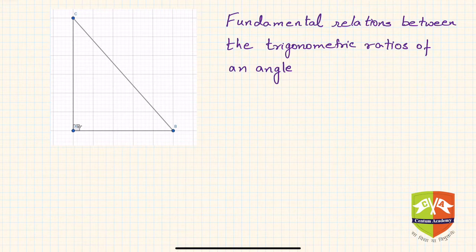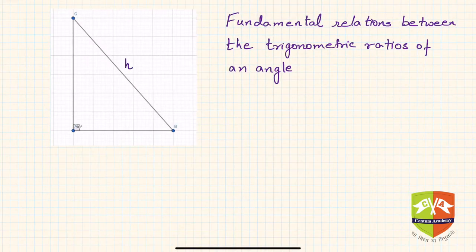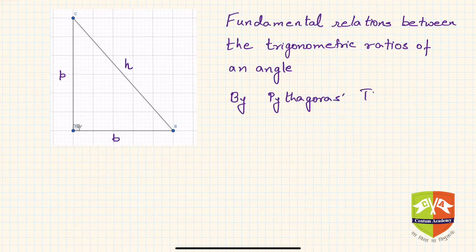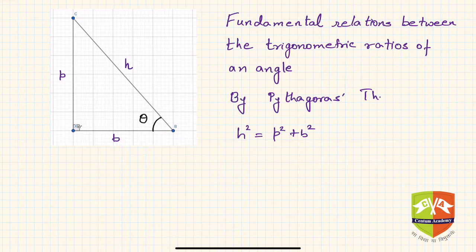Let us see the first and very basic relationship. I have shown a triangle ABC which is right-angled at A. Side BC is the hypotenuse h, side AB is the base b, and side AC is the perpendicular p. By Pythagoras theorem, we know that h² = p² + b². Let us assume angle ABC is theta.